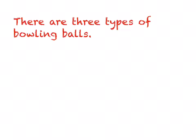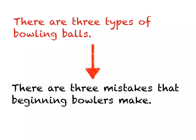Let's take a look at a thesis that one of my students wrote. He was a competitive bowler and wanted to talk about types of bowling balls, so he wrote: there are three types of bowling balls. The problem was that most people in the audience are only familiar with one type of bowling ball, so they really don't care about all the different types. He ended up switching it to: there are three mistakes that beginning bowlers make — that's a much more audience-centered speech. For the first thesis, the keyword is 'types,' so each main point would be a type of bowling ball. For the second, the keyword is 'mistakes,' so each main point was a mistake that beginning bowlers make. Other keywords include parts, steps, types, and mistakes, and you'll have an opportunity to have me look at those so I can make sure you're heading down the right path.